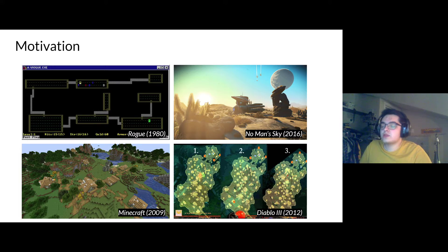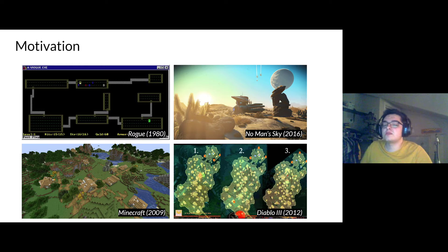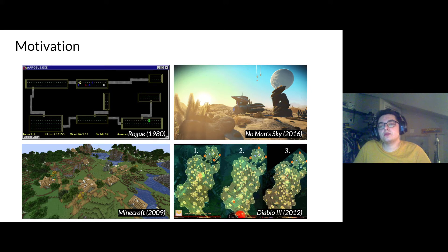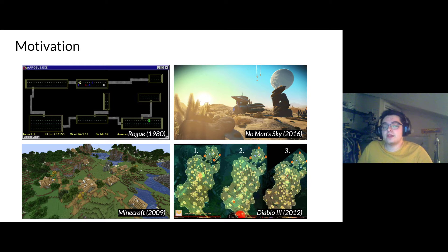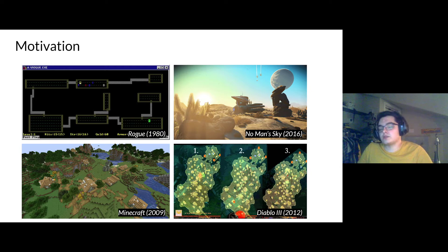Looking at Rogue, a video game from 1980 with procedurally generated dungeons — every time you load up the game or go to a new dungeon, you can expect a totally different dungeon. Similarly, No Man's Sky procedurally generated worlds along with creatures on each planet. In Minecraft, there's procedurally generated infinite worlds with mountains, rivers, oceans, and structures.